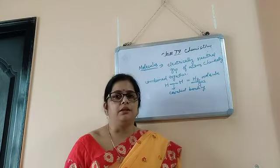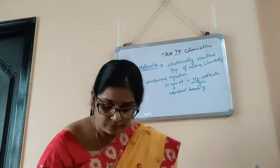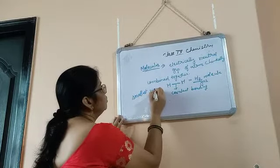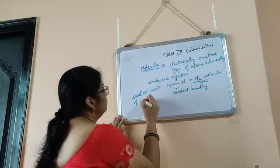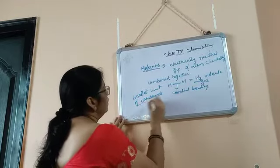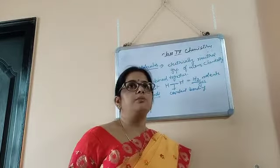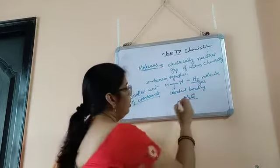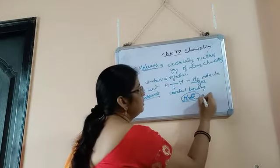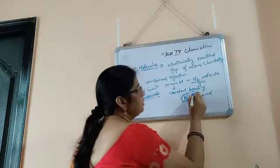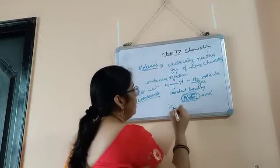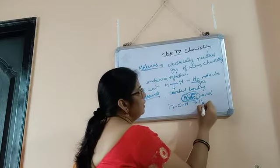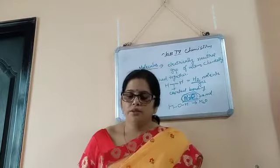Molecules are the smallest unit of compounds. For example, H2O is a compound — hydrogen and oxygen are chemically bonded together to form water molecules. So molecules are basically an electrically neutral group of atoms.